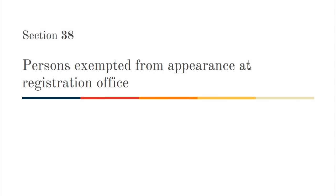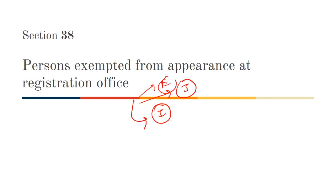Section 38 covers persons exempted from appearance at the registration office. These include: bodily infirm persons, persons in jail due to civil or criminal process, and persons exempted from appearance. In all such cases, the registering officer shall either personally go to the person's residence or jail, or issue a commission to examine them.